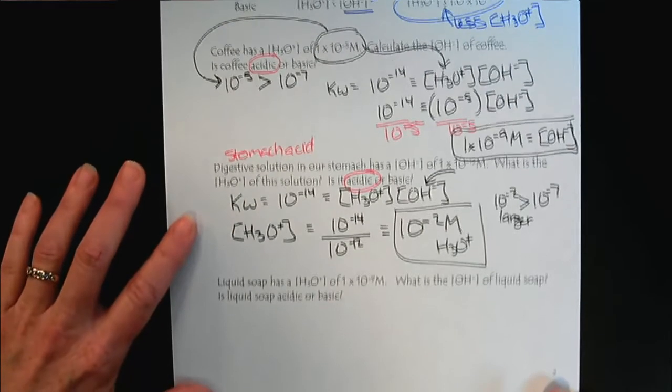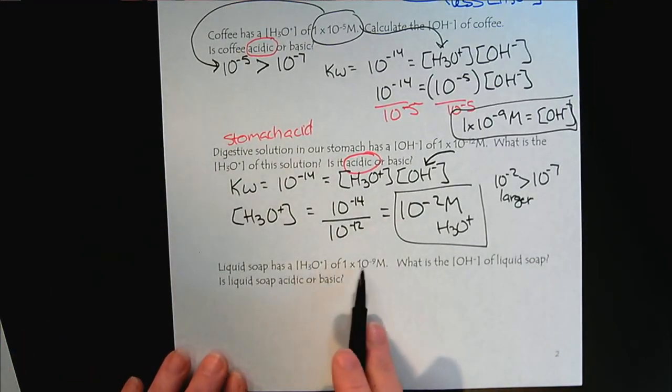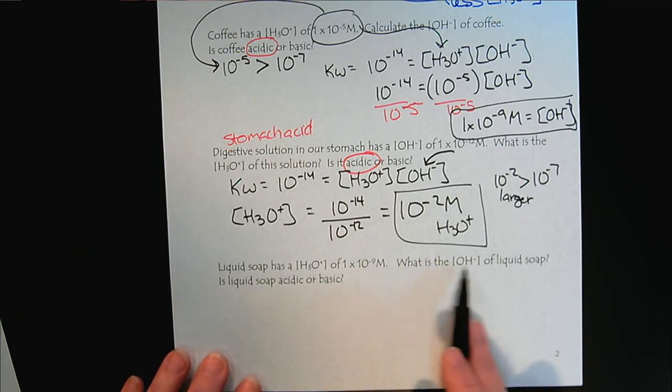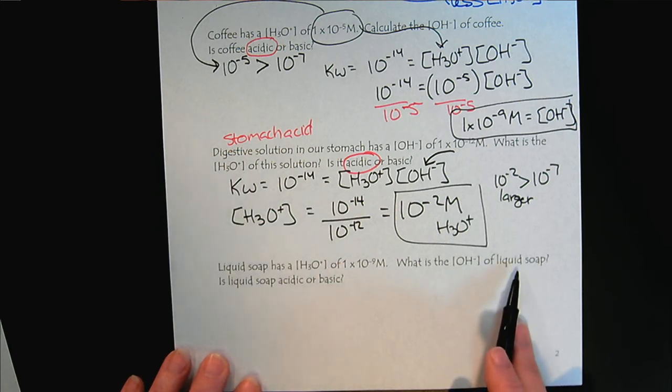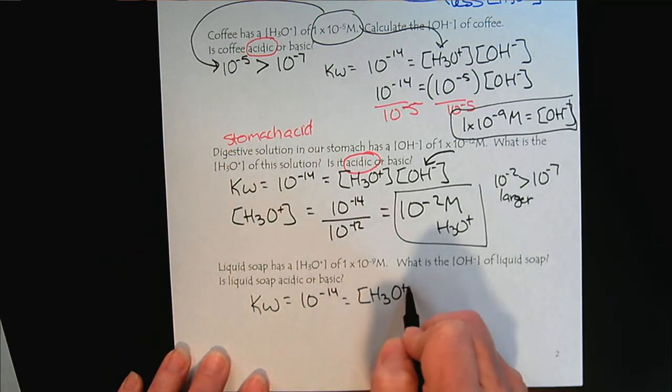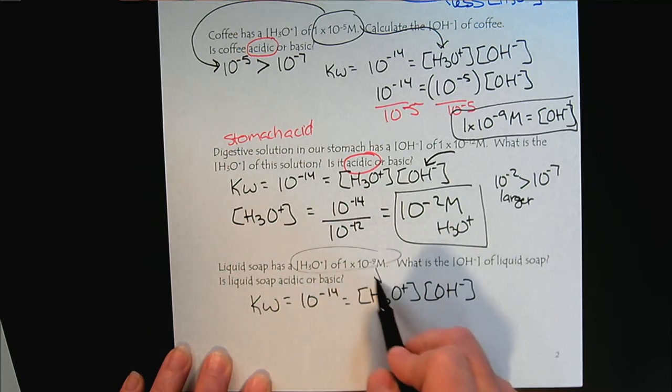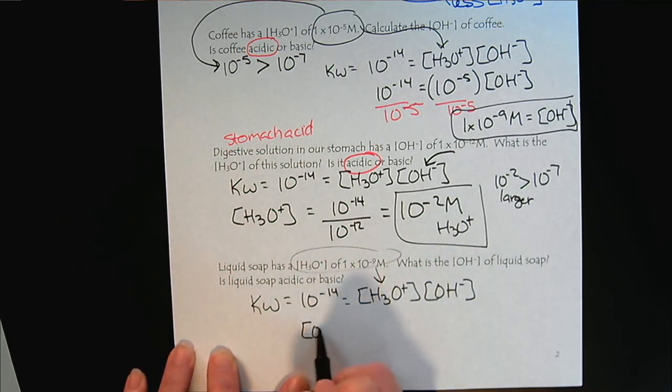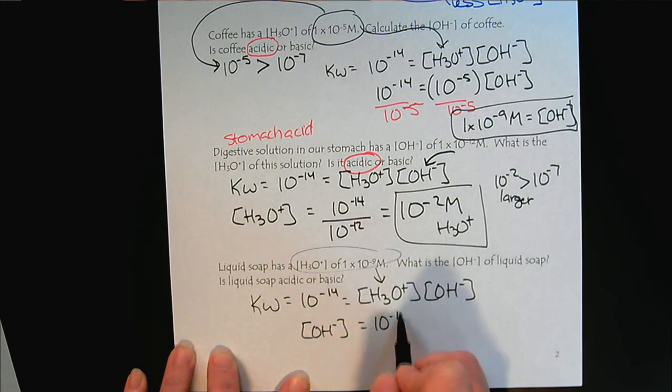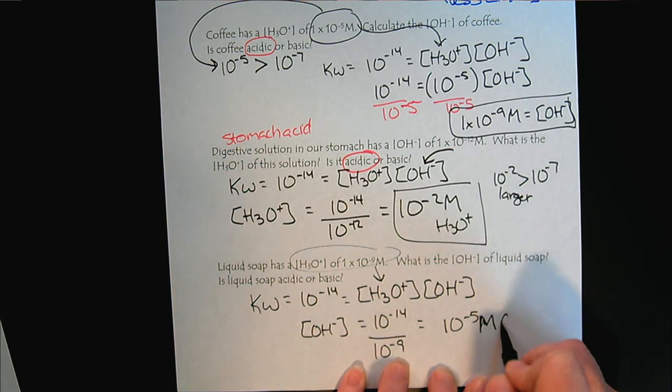And now let's work one last one. Liquid soap. Liquid soap has a hydrogen ion concentration of 1 times 10 to the minus 9 molar. What is the hydroxide's concentration of liquid soap? So by now this should be getting pretty comfortable for you. And we would have the hydronium and the hydroxide. So in this example, we were given the hydronium, so we would plug that in. And the hydroxide solution would be 10 to the minus 14 divided by 10 to the minus 9, which would be 10 to the minus 5 molar hydroxide.